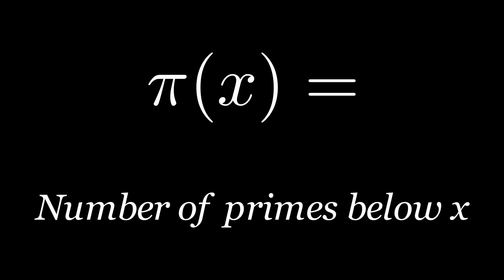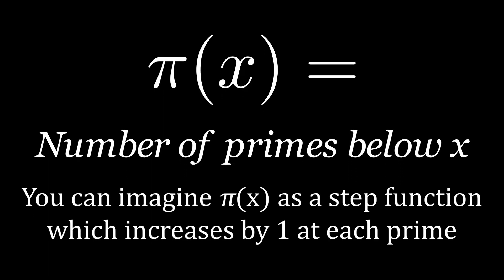For example, evaluated at 10, the prime counting function equals 4, because there are 4 prime numbers below 10.